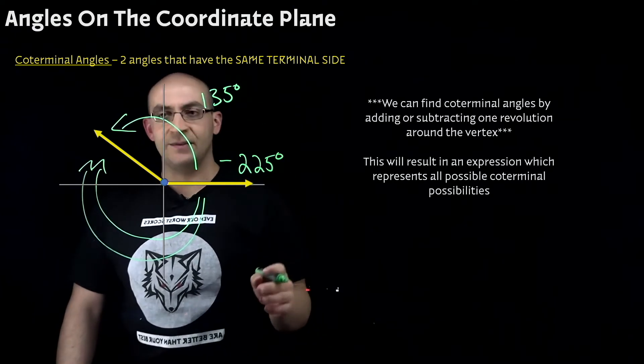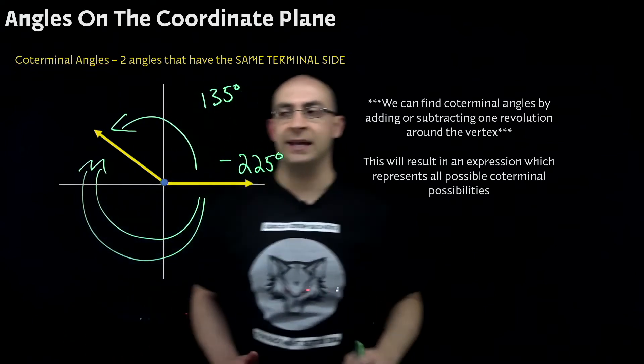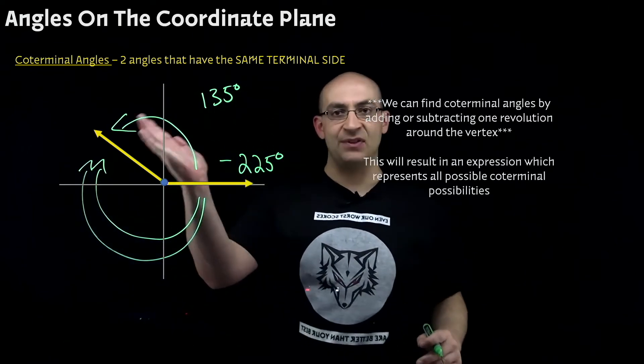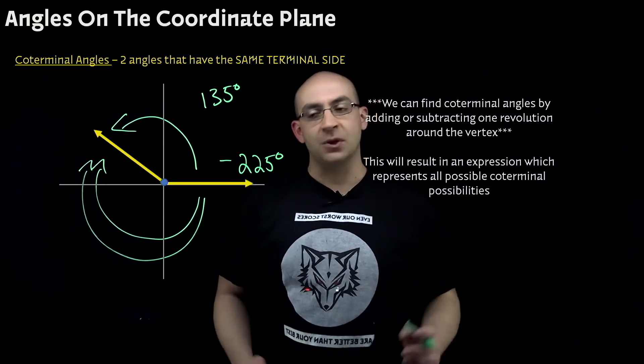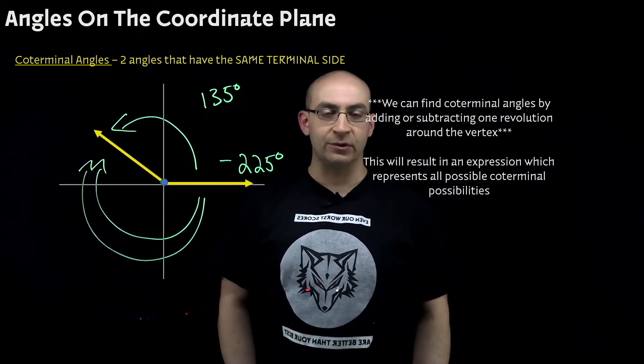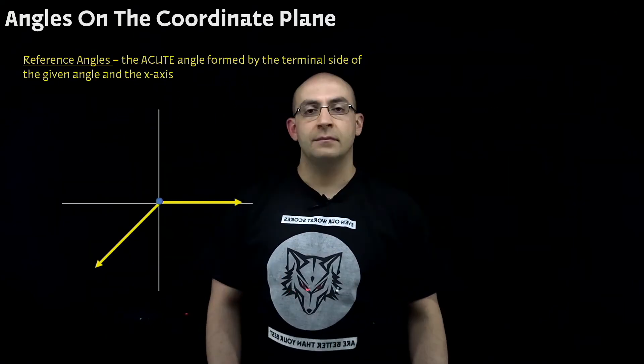Forget about the negative and positive. It's just two different ways to get to the same point. Coterminal means they both meet at the same termination point or terminal end. So we would add or subtract from one revolution around the vertex. A lot of these things we can just eyeball and then we can move on.